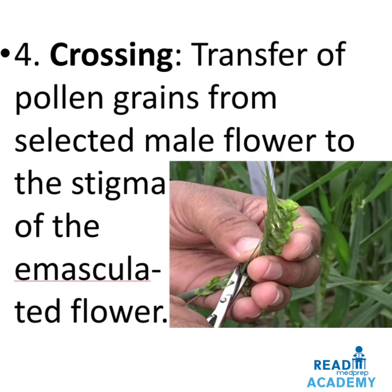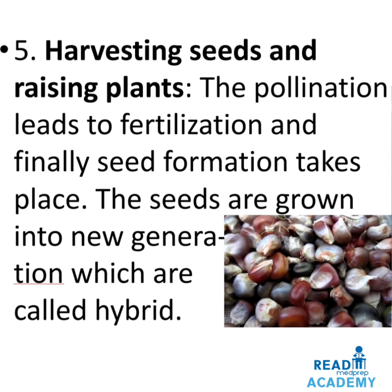Crossing is the transfer of pollen grains from the selected male flower to the stigma of the emasculated flower. Harvesting seeds and raising plants: pollination leads to fertilization, and finally seed formation takes place. The seeds are grown into a new generation which are called hybrids.